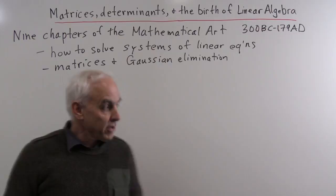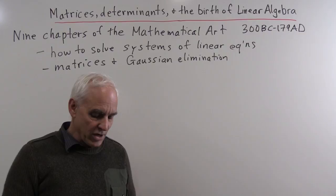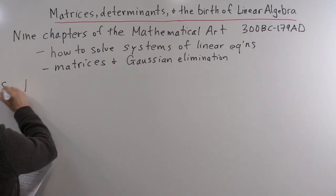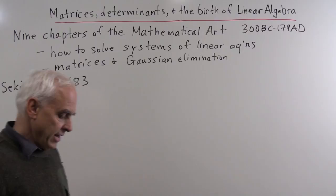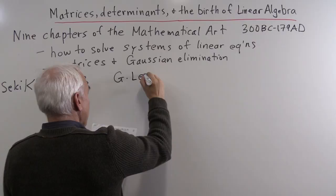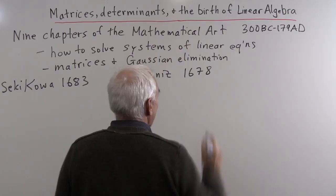This is a very ancient and important work that was much earlier than the European work in this direction. In modern times there was a Japanese mathematician whose name was Seiki Koa who around 1683 introduced a more modern approach to linear algebra and systems of equations, and simultaneously, more or less, in Europe, Gottfried Leibniz of calculus fame around 1678 considered the general problem.